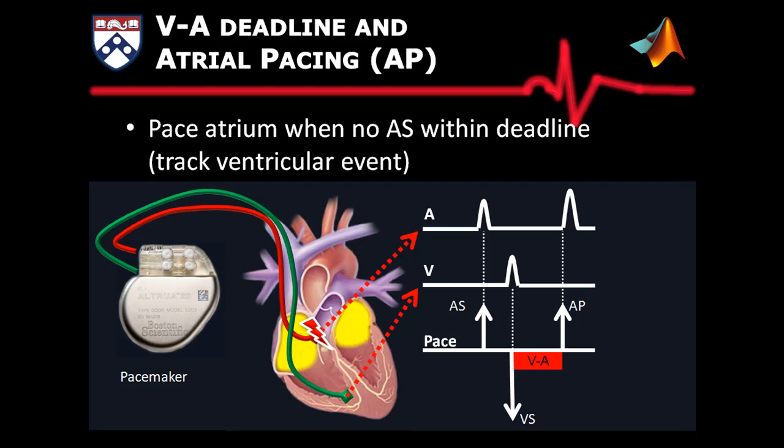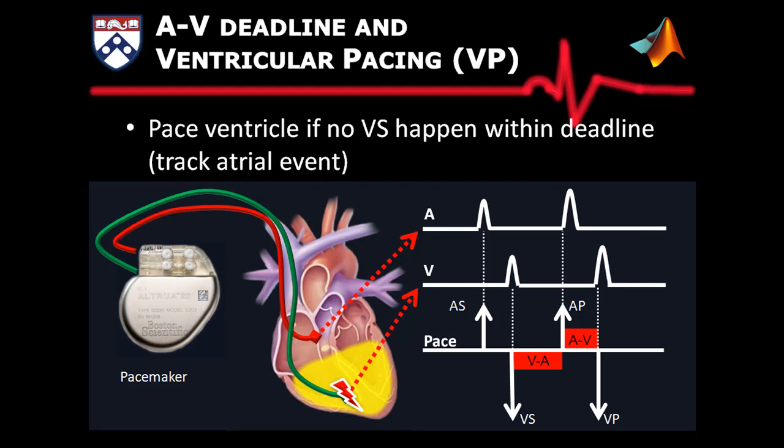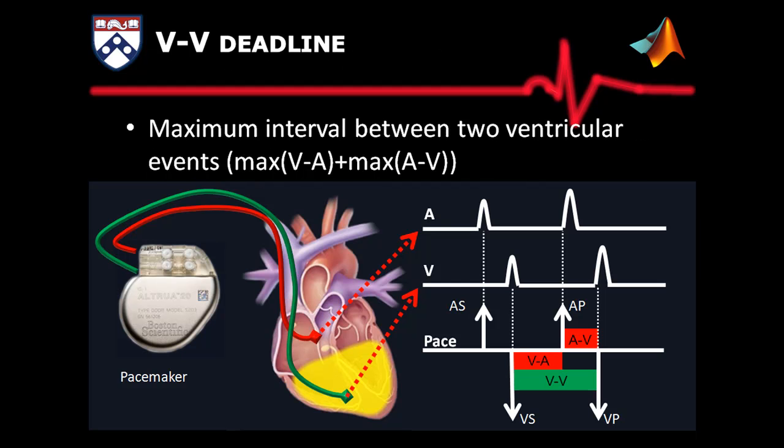After a ventricle event, if there is no atrial sense event within a VA deadline, the pacemaker will pace the atrium. After an atrial event, if there is no ventricular sense within an AV deadline, the pacemaker will deliver a ventricular pace. Both deadlines combined will ensure a maximum interval between two ventricular events, thus maintaining the heart rate above a certain threshold.